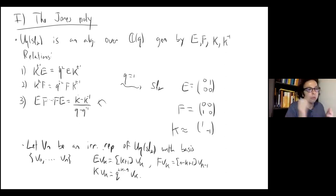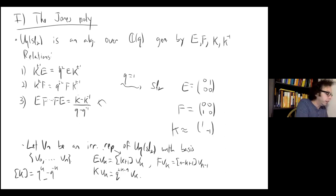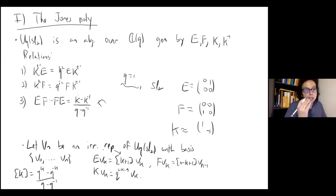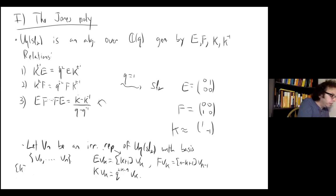One can check that applying EF minus FE gives K minus K⁻¹ over Q minus Q⁻¹, confirming we get a representation of this algebra. The fact that it's irreducible means it has no proper subspaces. UqSL2 is a Hopf algebra — meaning it's an algebra, a co-algebra, and has an antipode. The key point is the co-algebra structure allows one to take tensor products of representations and have them remain representations.